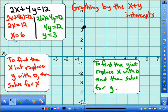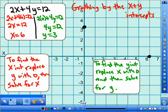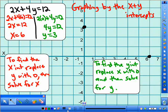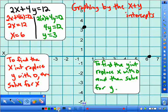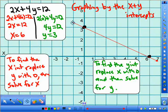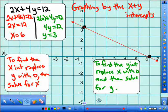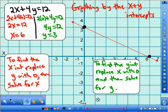And my X intercept is at 6. So that point is right here. So now I draw the line. And that's my graph for the equation 2X plus 4Y is equal to 12.